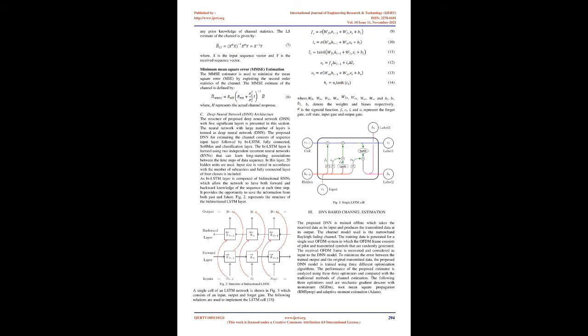Minimum Mean Square Error (MMSE) estimation: The MMSE estimator is used to minimize the mean square error (MSE) by exploiting the second-order statistics of the channel. The MMSE estimate of the channel is defined in equation (8), where H represents the actual channel response.